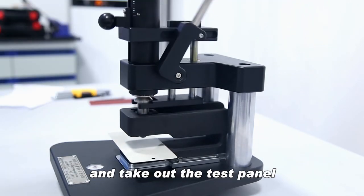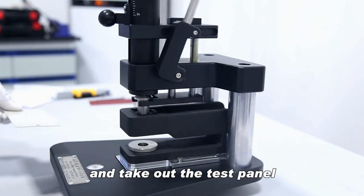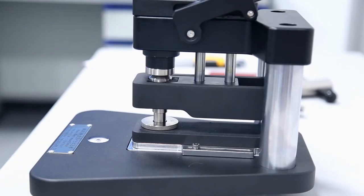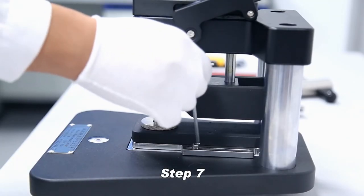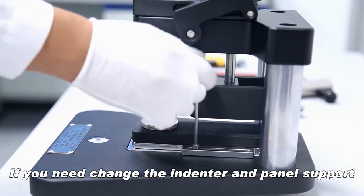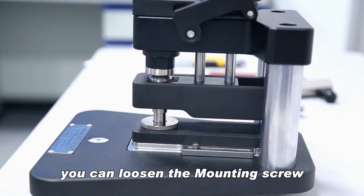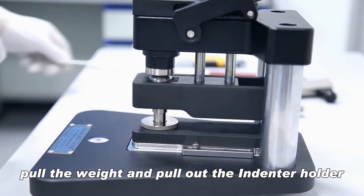Take out the test panel. If you need to change the indenter and panel support, loosen the mounting screw, pull the weight, and pull out the indenter holder.